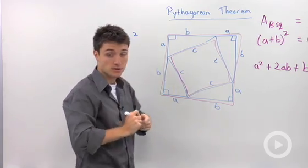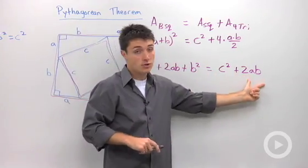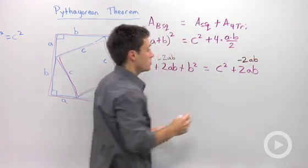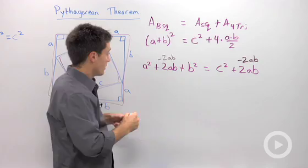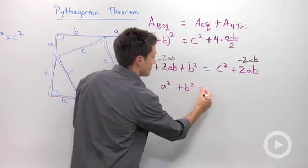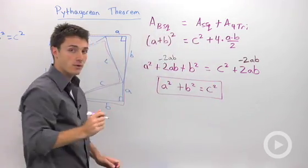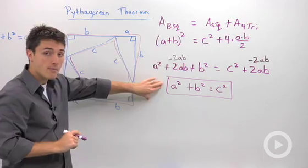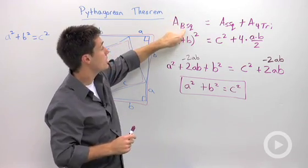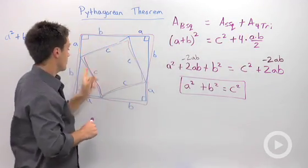We're not quite at the Pythagorean theorem yet, so I need to manipulate this equation. I can see that I have 2ab on both sides, so I'll subtract 2ab from both sides. On the left: a squared, 2ab minus itself is 0, plus b squared. On the right: 2ab minus itself is 0. We end up with a squared plus b squared equals c squared — our Pythagorean theorem. The key to this proof was writing the equation that the area of the big square equals the area of the small square plus the area of the four triangles.